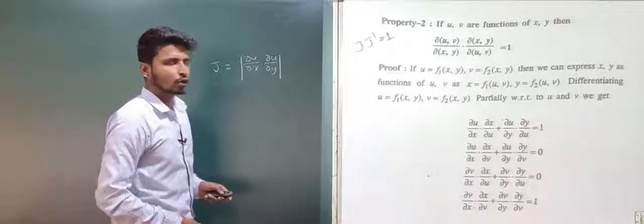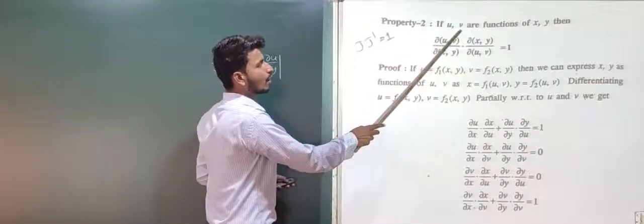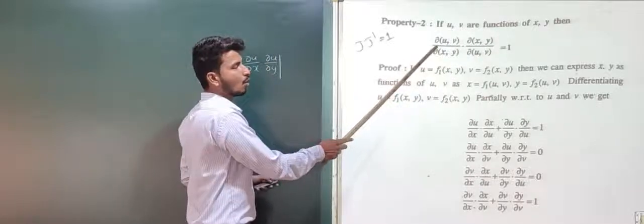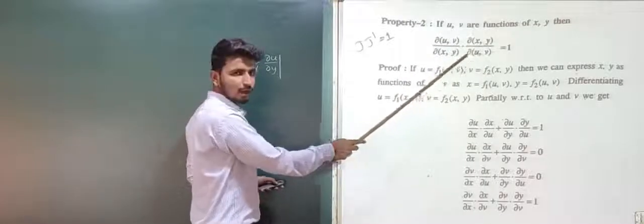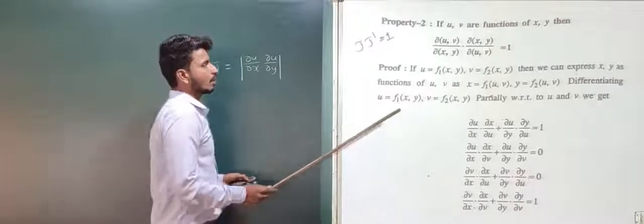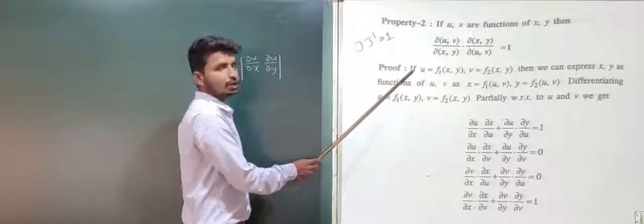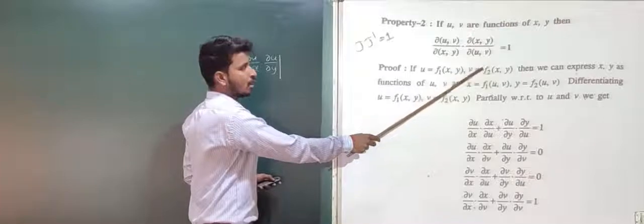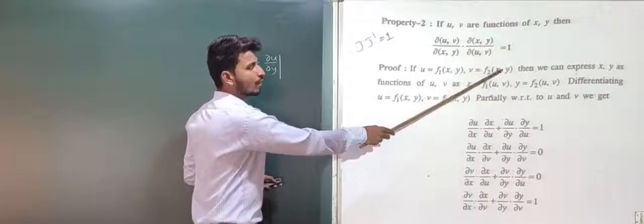Property 2 states: if u and v are functions of x and y, then we have to prove that ∂(u,v)/∂(x,y) × ∂(x,y)/∂(u,v) = 1. In the proof, we consider u = f₁(x,y) and v = f₂(x,y).